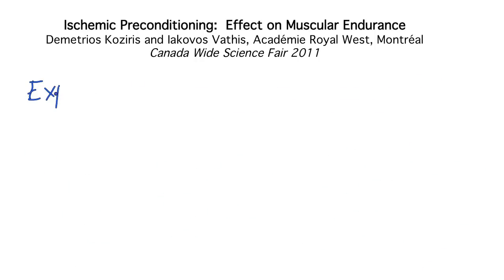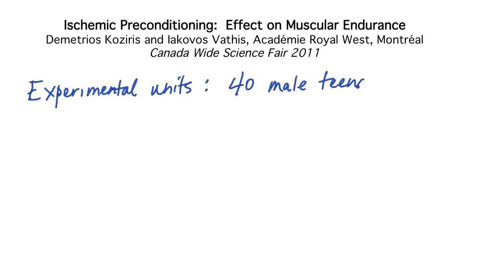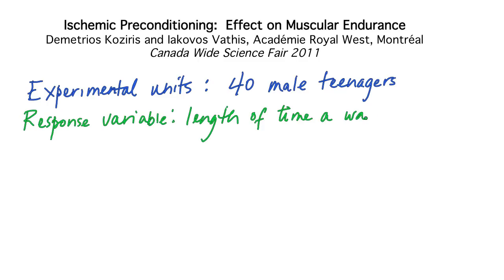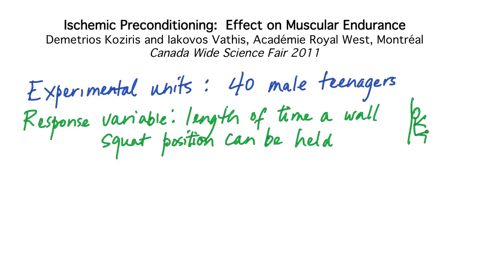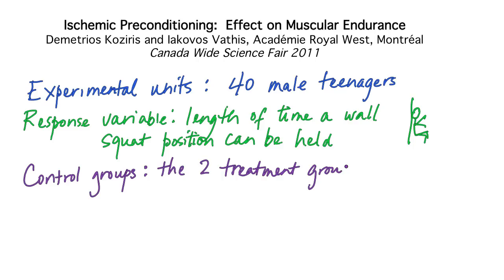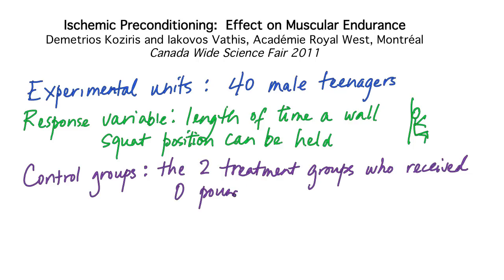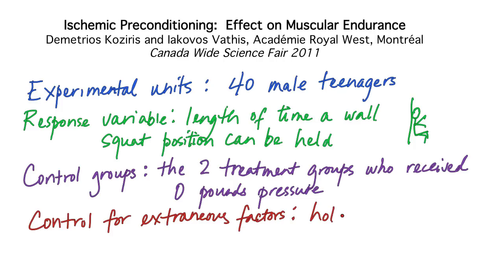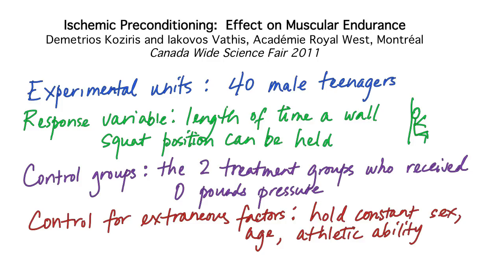Since there are four treatments, there were 40 participating teenagers, and these are the experimental units. They were chosen to be of similar athletic ability. After application of the treatment, the length of time the teenagers could stay in a wall squat position was measured — this is the response. Note the use of a control group: the students gave a sham treatment of 0 pounds to some of their experimental units, some of whom got 0 pounds for 10 minutes and some for 20 minutes. To control for extraneous factors, only male teenagers of similar athletic ability were studied, chosen because they participated in sports at school.